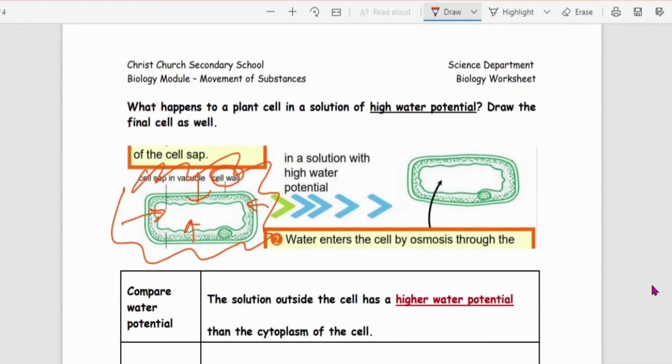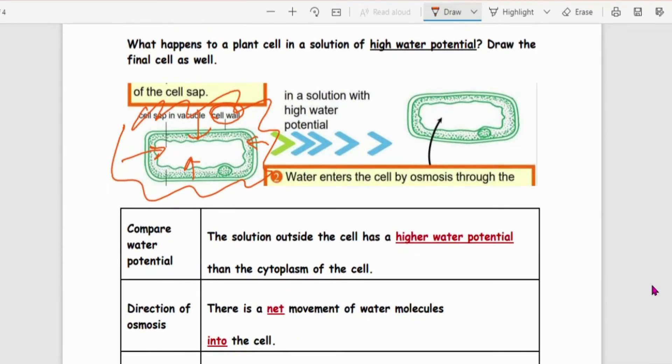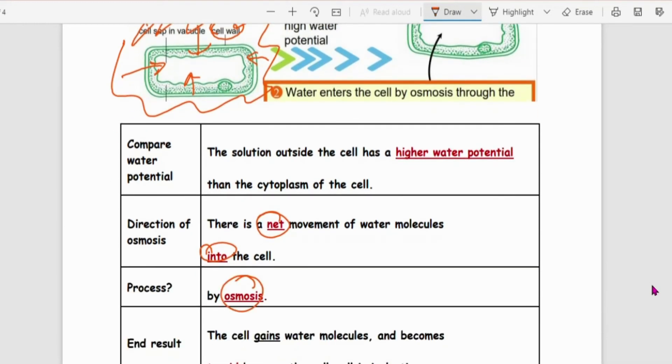So first things first. How to explain what happens to it. So we know outside has higher water potential. So there's a net movement of water molecules into the cell. So what process is this? Because it's water molecule movement, this is osmosis.